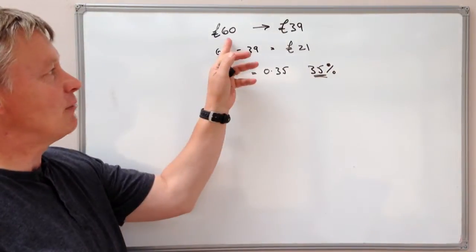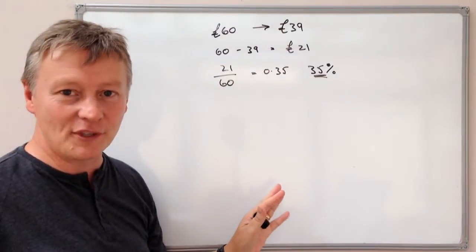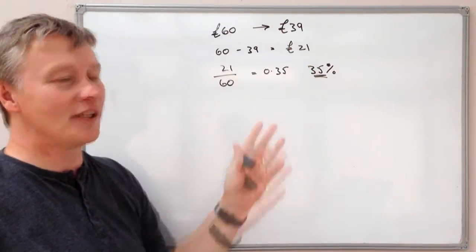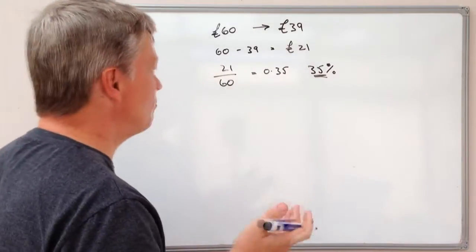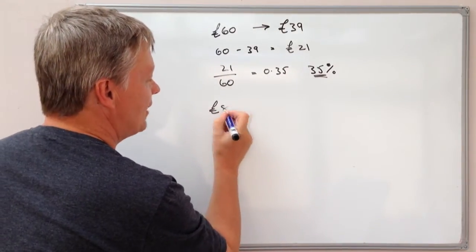So this item has been reduced by 35% in order to get to £39. Let's take another example. An item might be say £84,